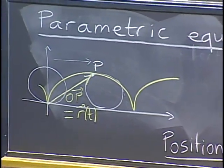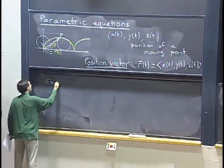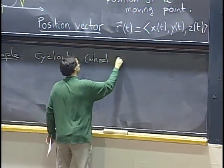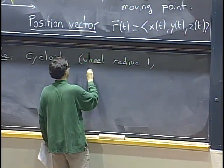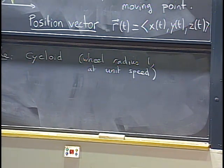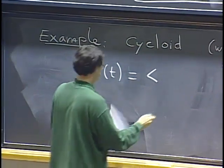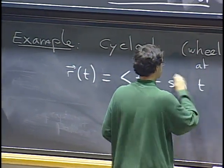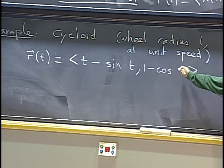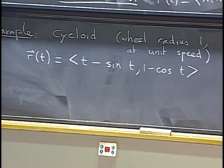To give you that example again: if I take the cycloid for a wheel of radius one, and we are going at unit speed so that the angle we used as a parameter last time is the same thing as time, then the position vector in this case we found to be (t minus sine t, 1 minus cosine t). That's a formula you should have in your notes from last time, except we had theta instead of t.